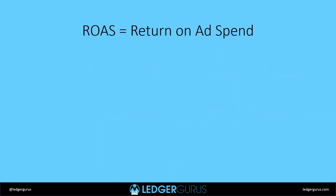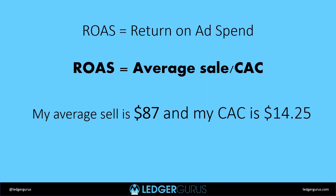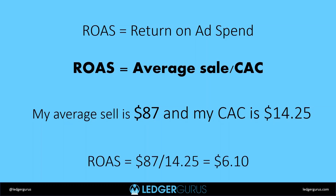The next metric to calculate is ROAS — return on ad spend. ROAS equals your average sell value divided by your CAC. We're going to keep this simple and call return on ad spend your average sell dollar amount divided by CAC. So if my average order is $87 and my CAC is $14.25, then my ROAS is $87 divided by $14.25, which is $6.10. This means for every dollar I spend on marketing, I make back $6.10 in sales.